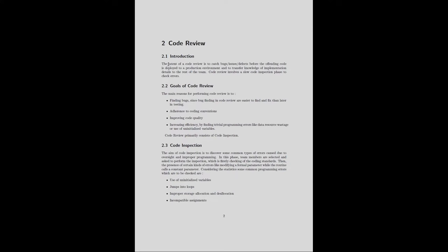Next comes the core component of the document — the code review part. The intent of a code review is to catch bugs, issues, and defects before the offending code is deployed to a production environment, and to transfer knowledge of implementation details to the rest of the team. Code review involves a slow code inspection phase to check errors, and this document clearly mentions the review procedure is based on the code inspection method.